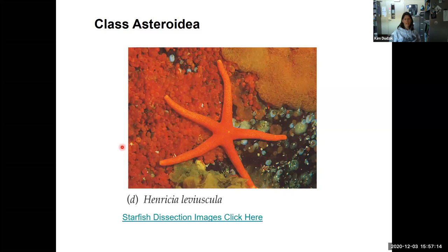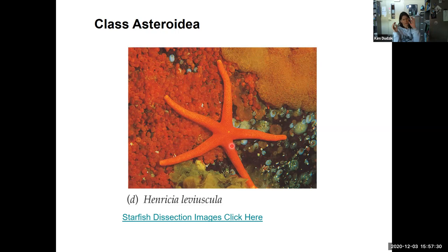Class Asteroidea are probably what you're most familiar with — these have the typical five arms and tube feet on the bottom. They're very predatory on bivalves. They can take their tube feet with suckers and attach to either end of a bivalve — things like clams and scallops — and pry it open. Then they can evert their stomach, pushing it out of their body into the bivalve and digesting the bivalve in its own shell.